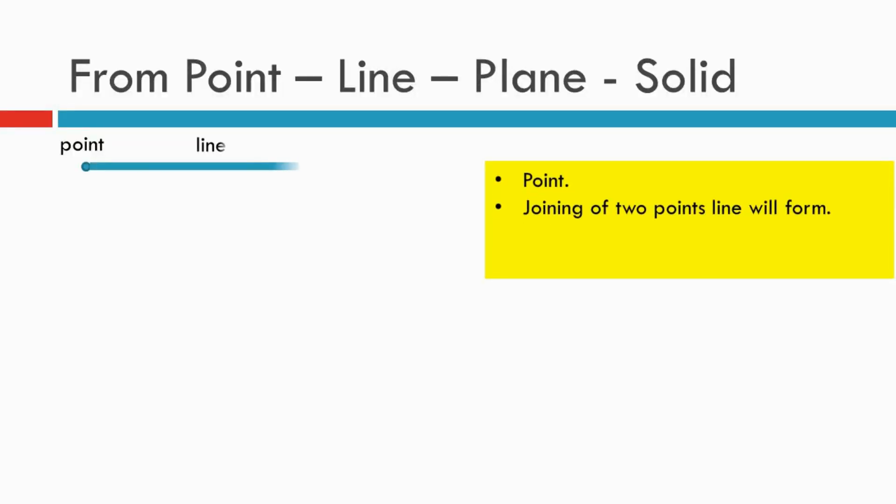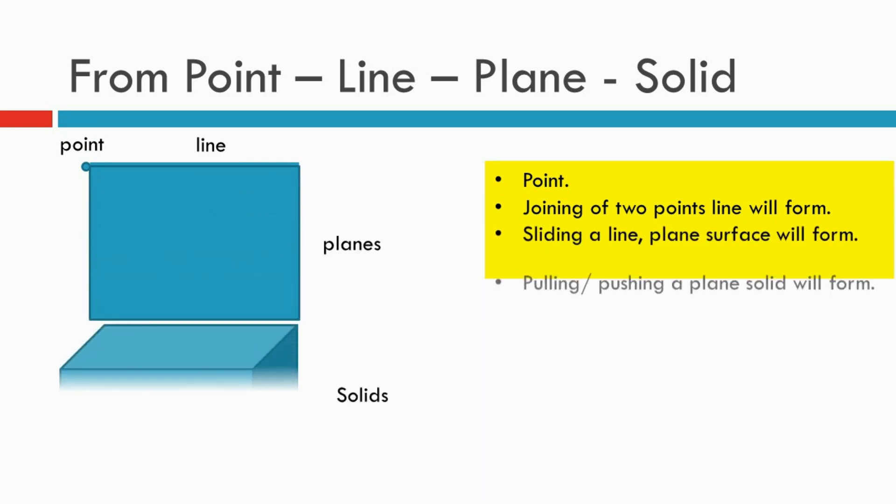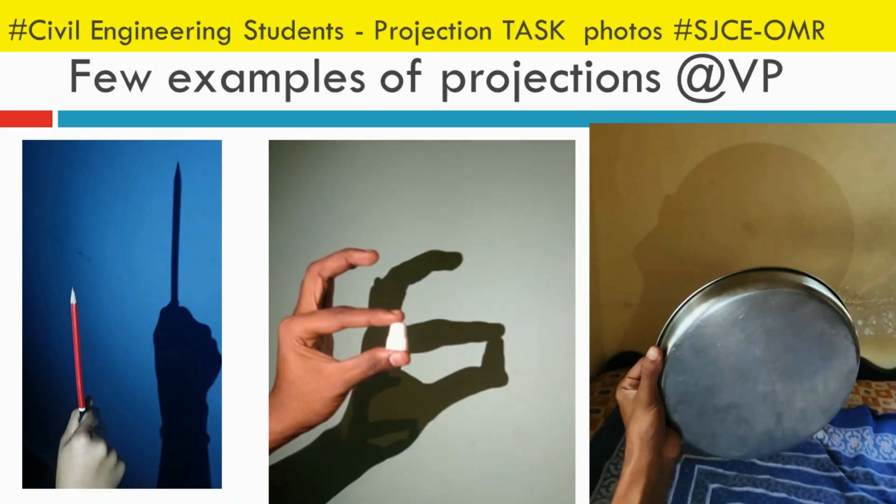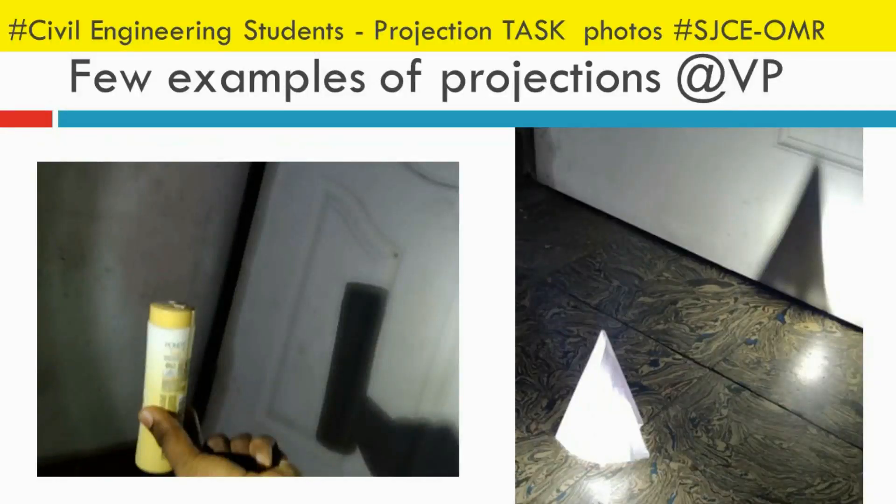Here are some projection demo examples from my students. They projected the object in the vertical plane — that is VP. This is an example of solid projections: they are projecting cylindrical objects, a cone, a prism, and a pyramid. The top view is projected in the horizontal plane. We assume we are using a beam of light which is parallel to the object while projecting.